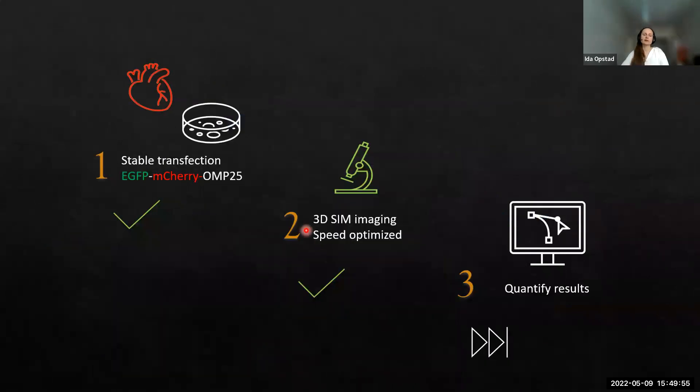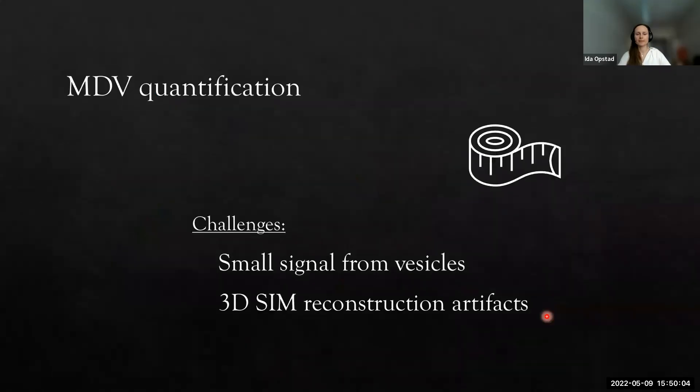We have a nice stably transfected cell line and we have optimized imaging conditions. Let's see if we can quantify the results. The main challenges here are the very small signal from the vesicles in between these much larger mitochondria. At the same time, we have some percent of reconstruction artifacts from the algorithm that can look confusingly like vesicles and have a similar signal.